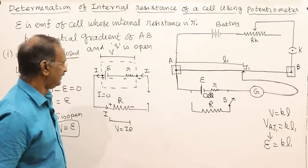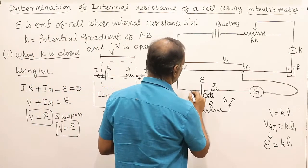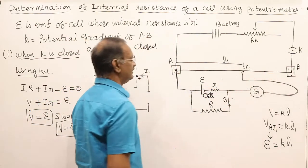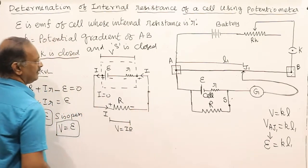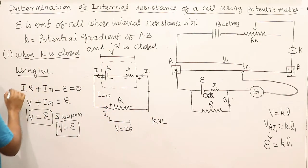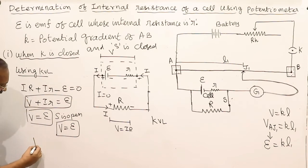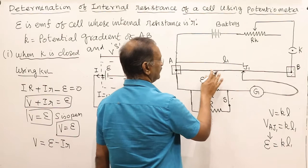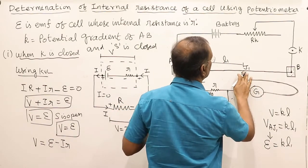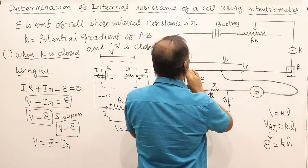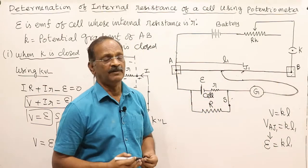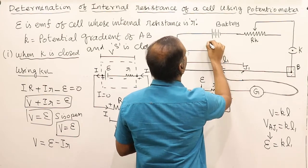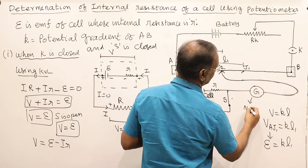Now for the second condition: switch S is now closed, and K remains closed. Applying KVL again, we obtain that the terminal potential difference equals E minus I×r. After closing S, we move the jockey along AB to find the new null point. Say the null deflection is now obtained at J2, which is at a distance L2 from A.